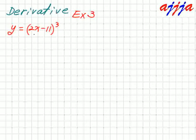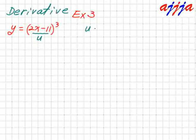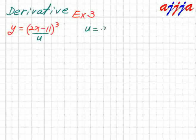All right, we came back to the exponent rule. Okay, we treat this one — I call this one like a baby. This time I'm going to call this one u. So u equals 2x minus 11.